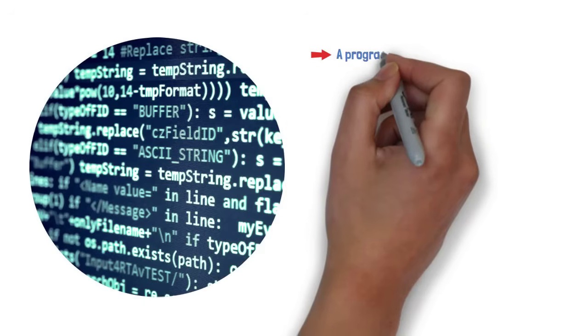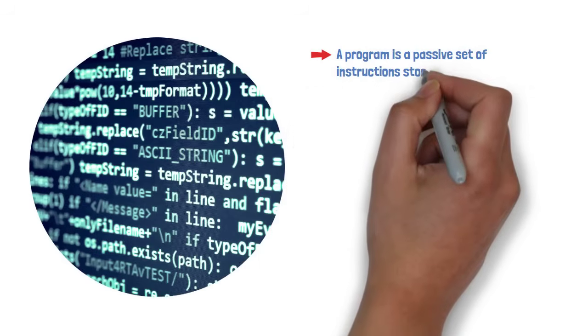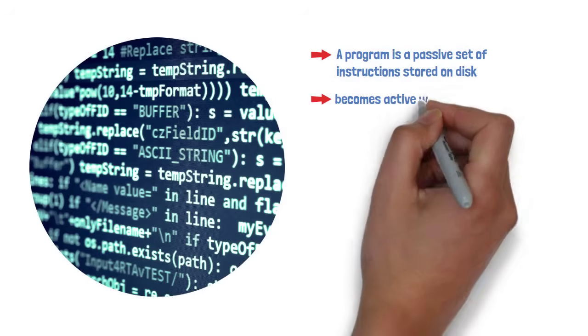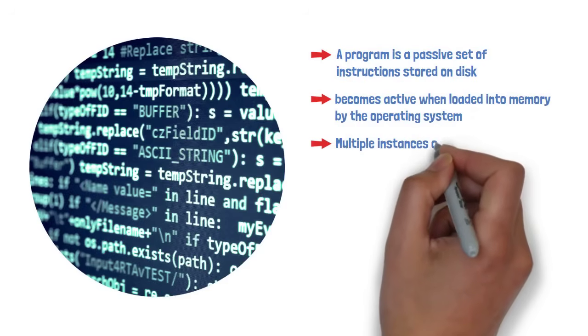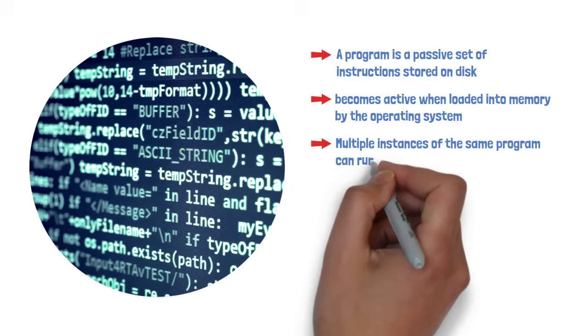A program is a passive set of instructions stored on disk. It becomes active when loaded into memory by the operating system. Multiple instances of the same program can run as separate processes.